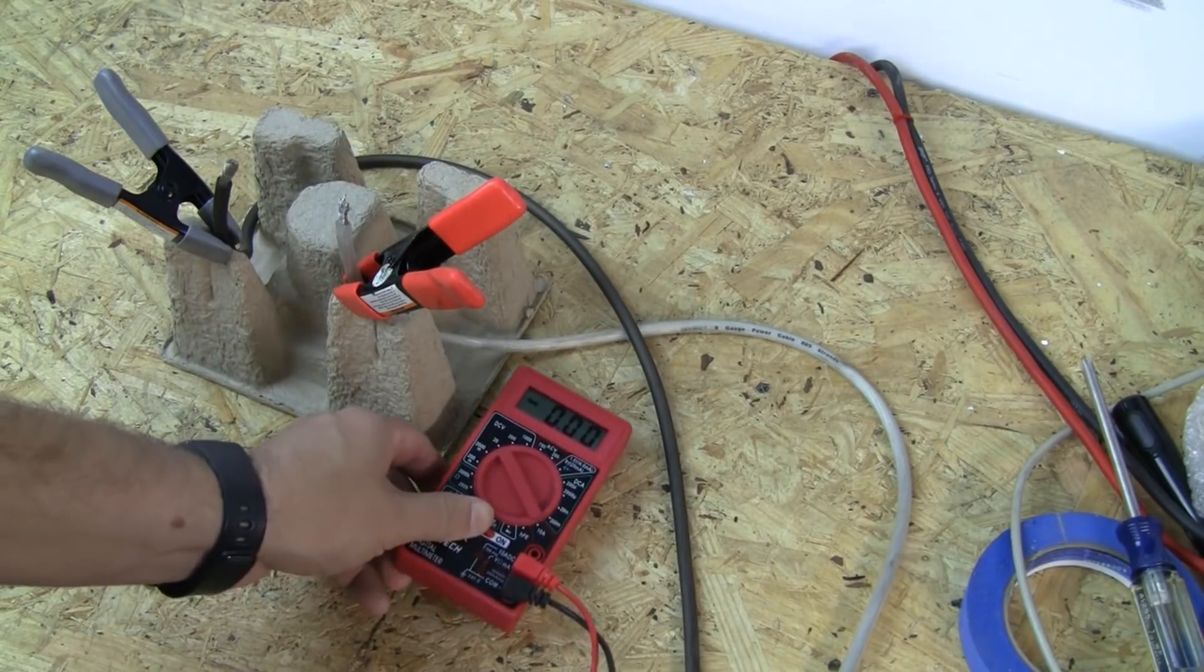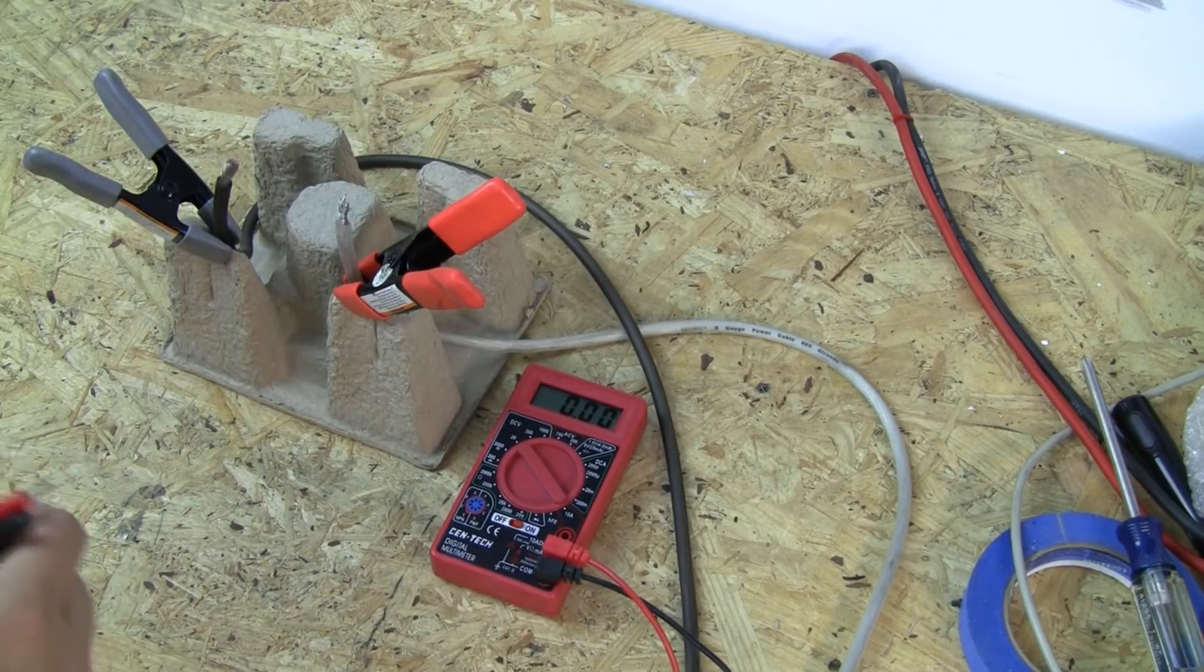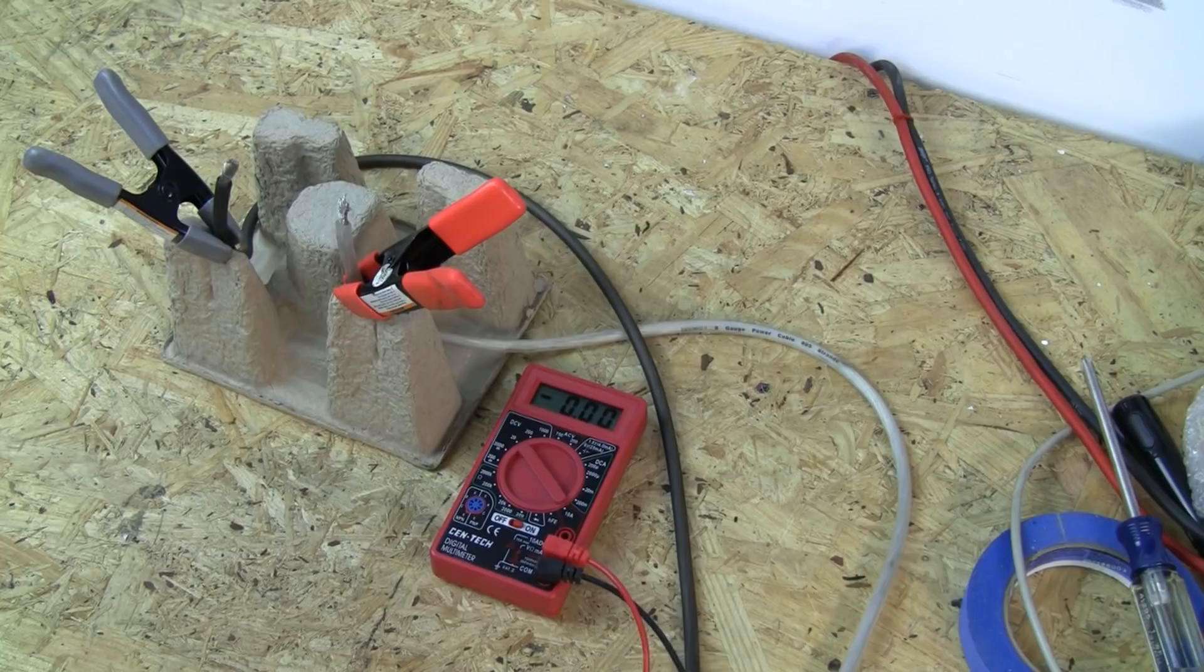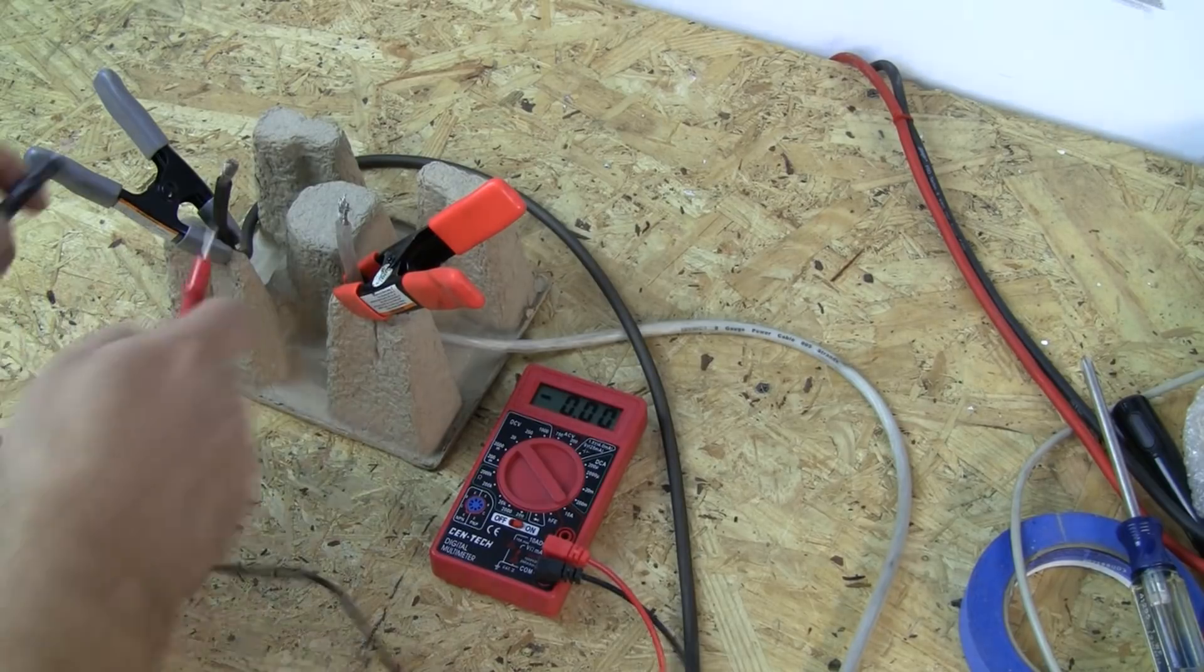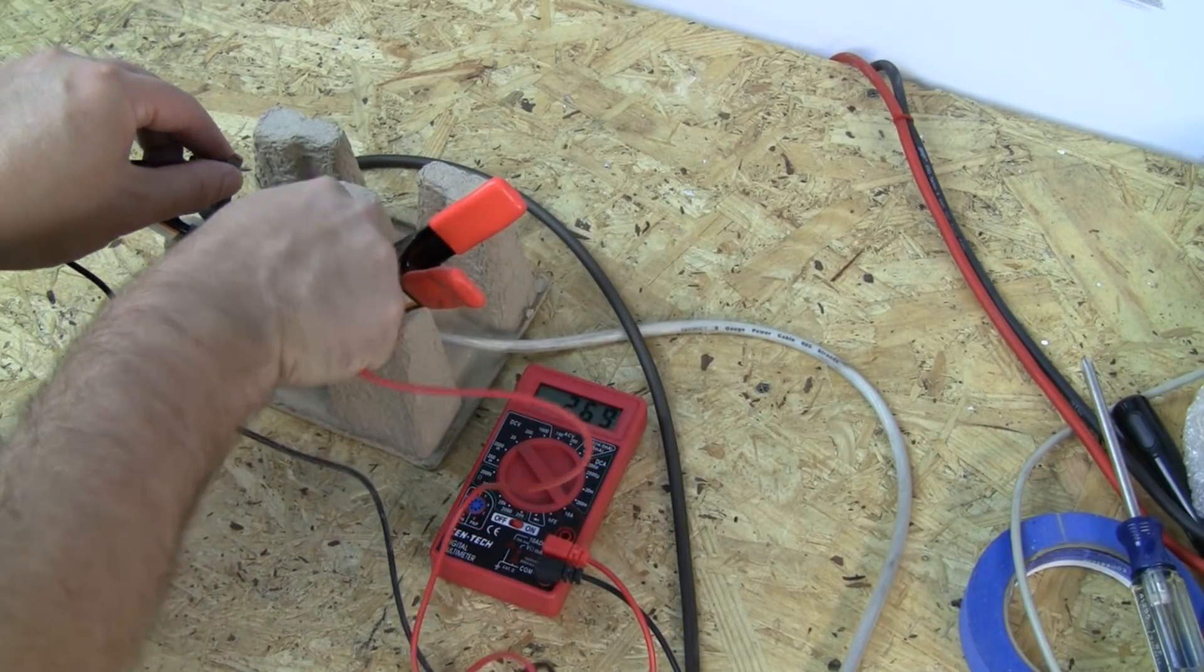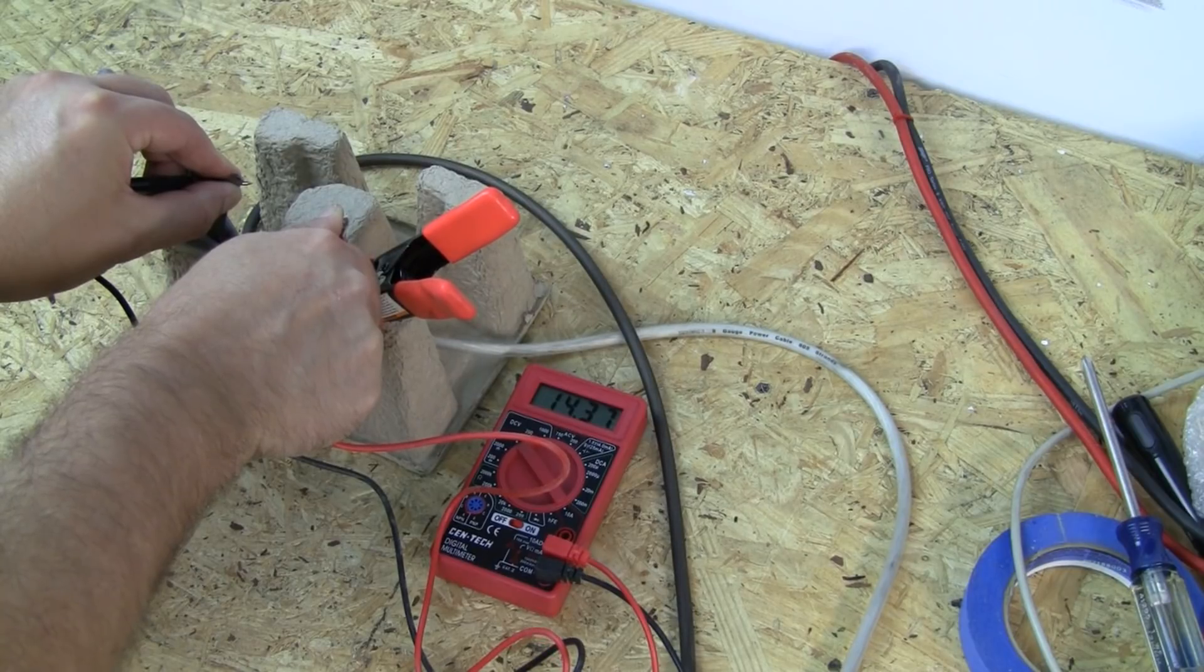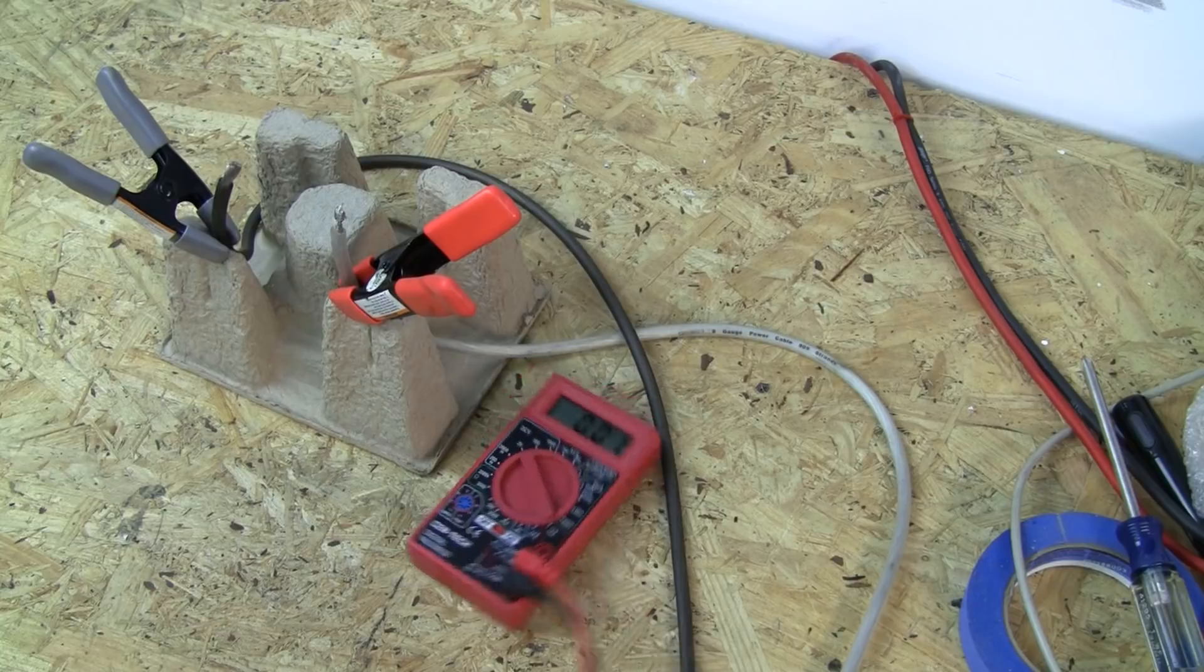So this one is a Centec. This is a freebie from Harbor Freight if you get their catalog. If not they're like six dollars. We're gonna compare how good this is to the other ones on testing DC voltage. 14.37. So on voltage this is reading a little bit high but it's not completely out of line.